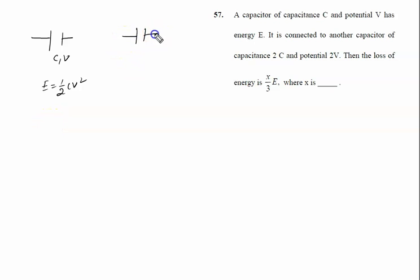We take another capacitor having capacitance 2C and potential 2V and we connect them like this. This is the capacitor of capacitance C. This is 2C.